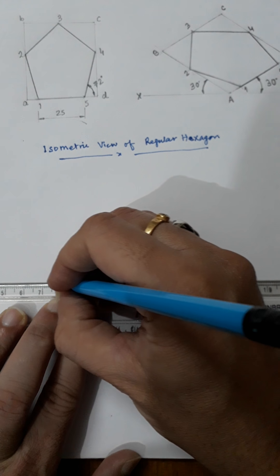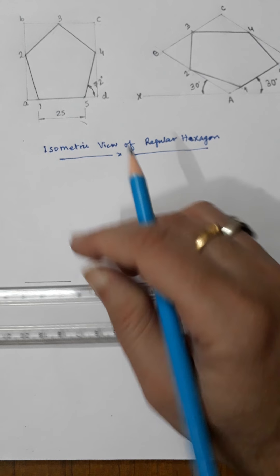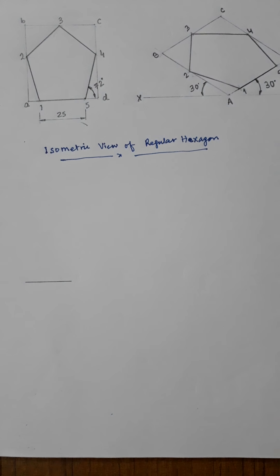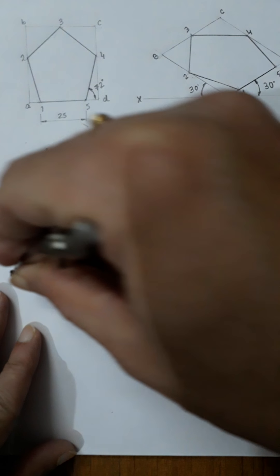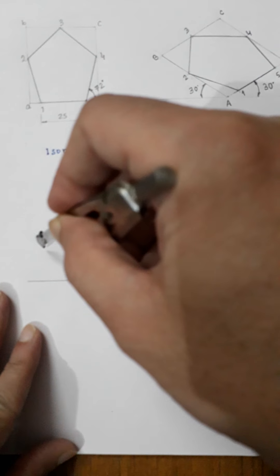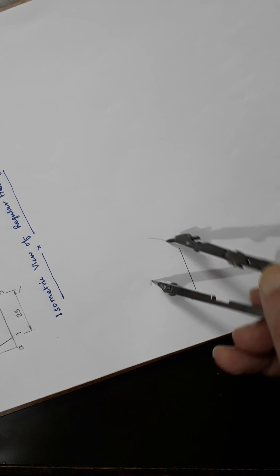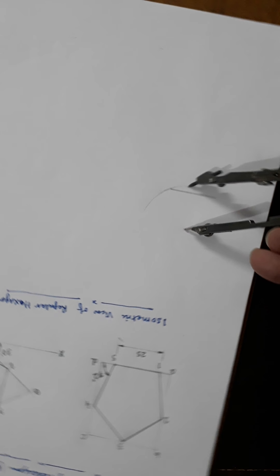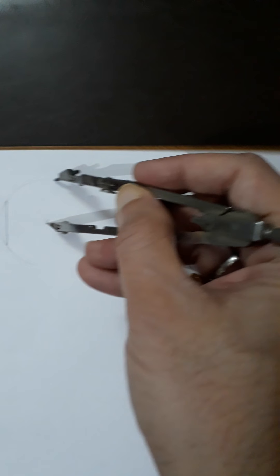I will be drawing a 25mm side hexagon. You can either use 120 degree angles on both sides, or you can simply draw this by using the circle method. I will be drawing this using the circle method, so there is no need to measure the angles.